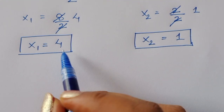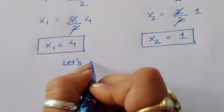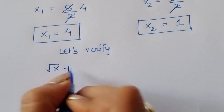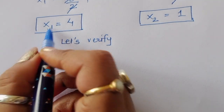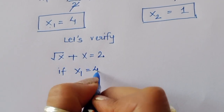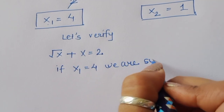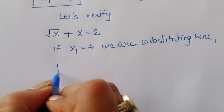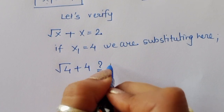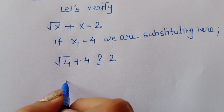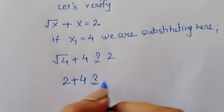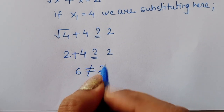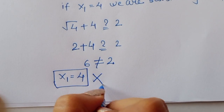Substituting x₁ = 4 into √x + x = 2: √4 + 4 = 2 + 4 = 6, which is not equal to 2. So x₁ = 4 is not a correct solution and is rejected.